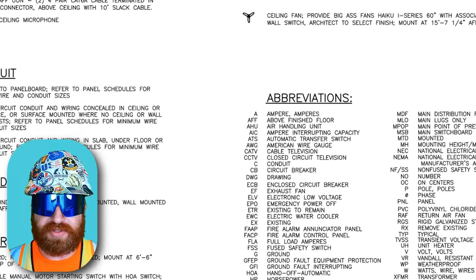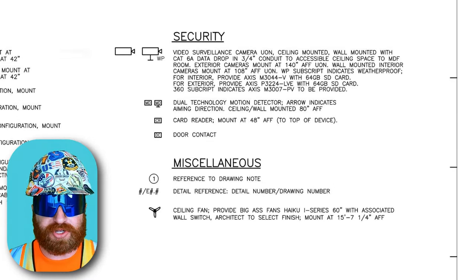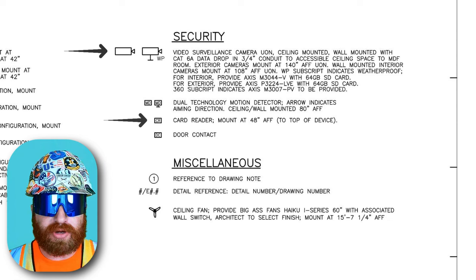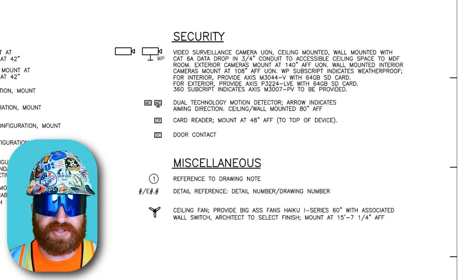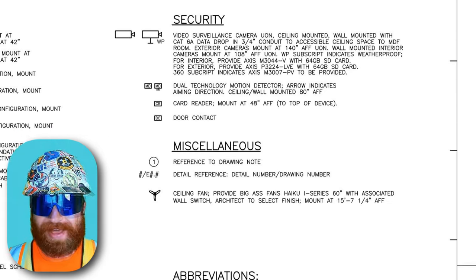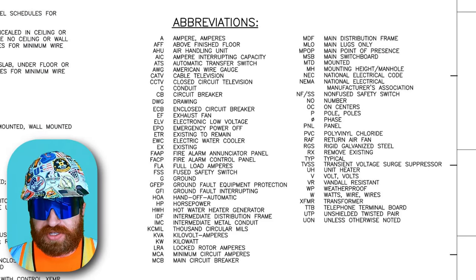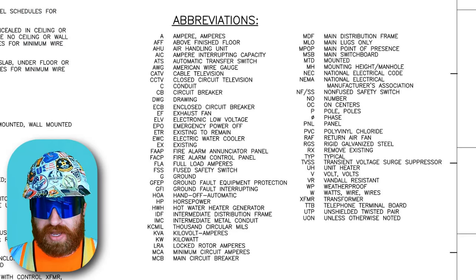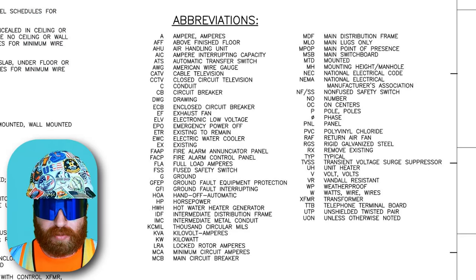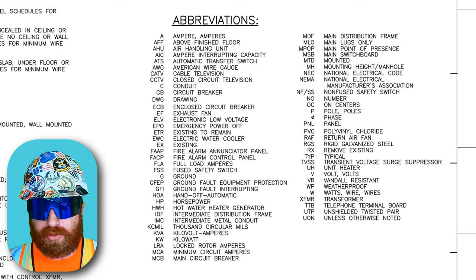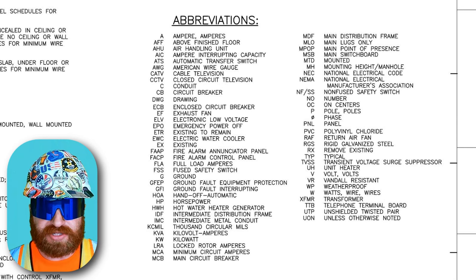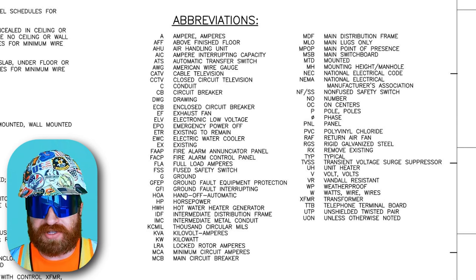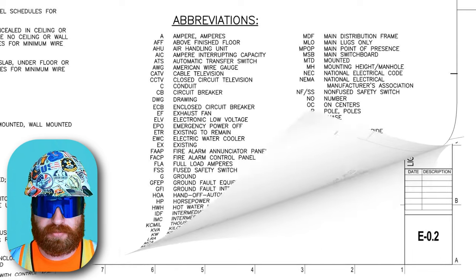Finally, we look at the security symbols in the top right: security cameras, card readers, and door contacts, which will be explained more later in the video. Other than that, there are some abbreviations listed on this page that we can always reference back to, but the symbols are the bulk majority of explaining the systems we'll see on the plan view of these drawings.